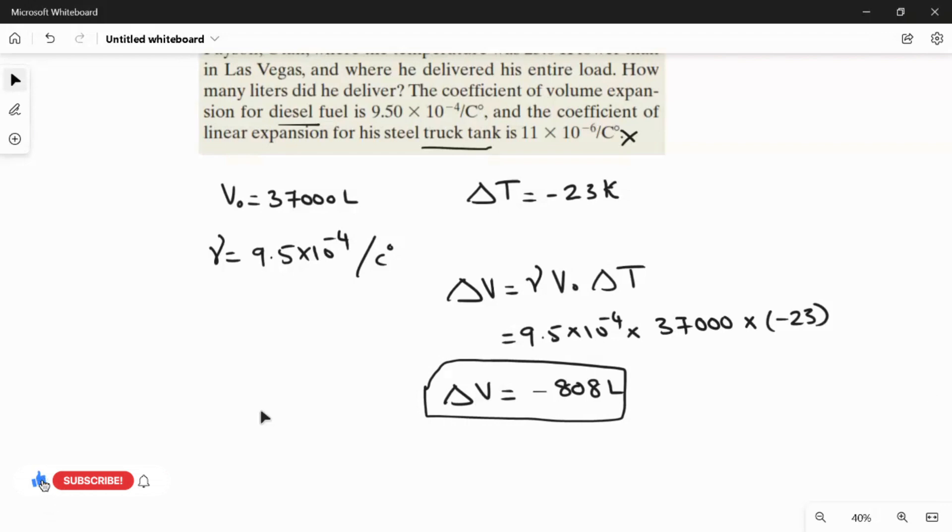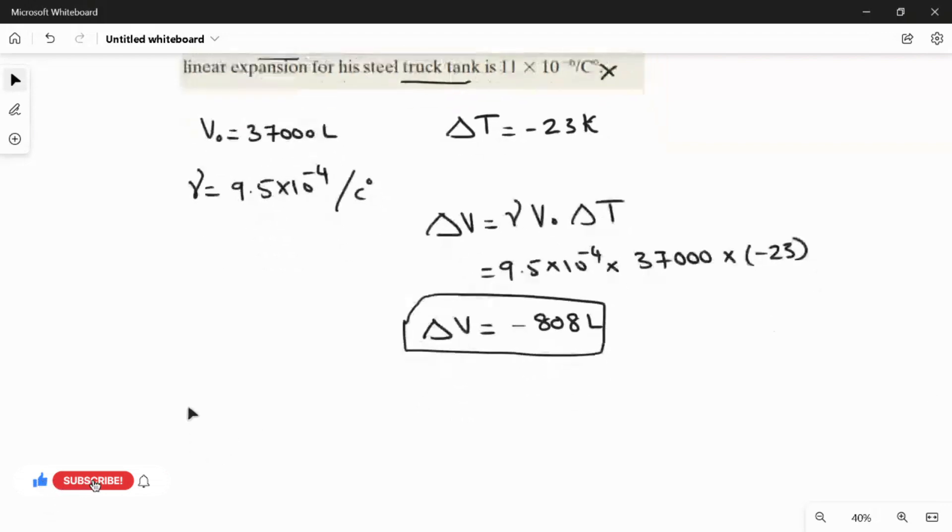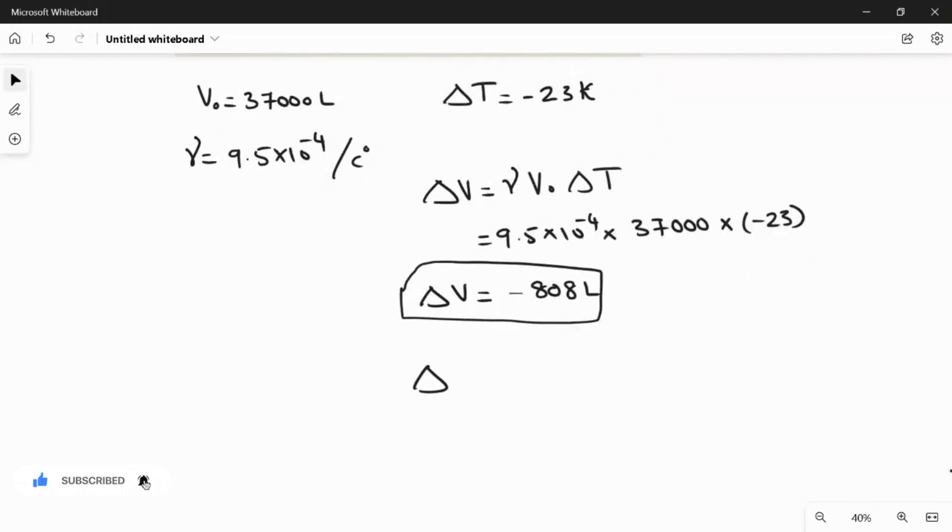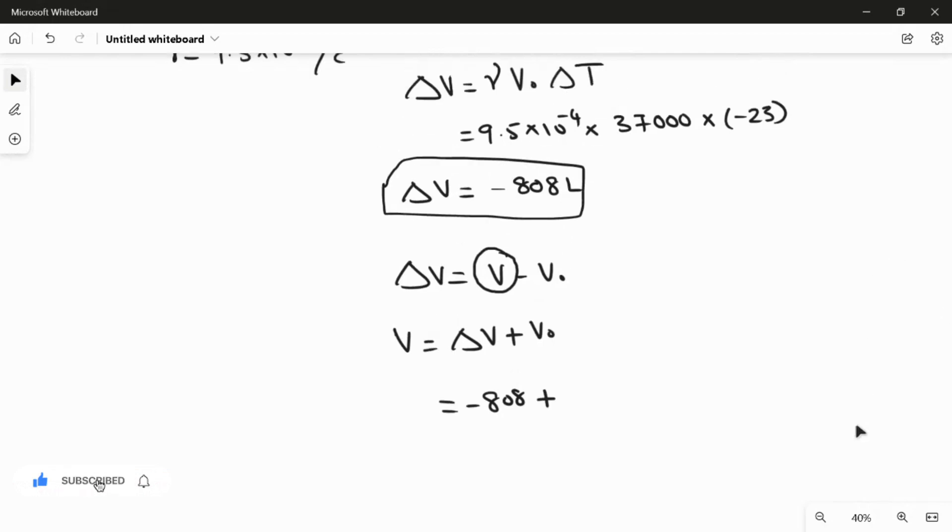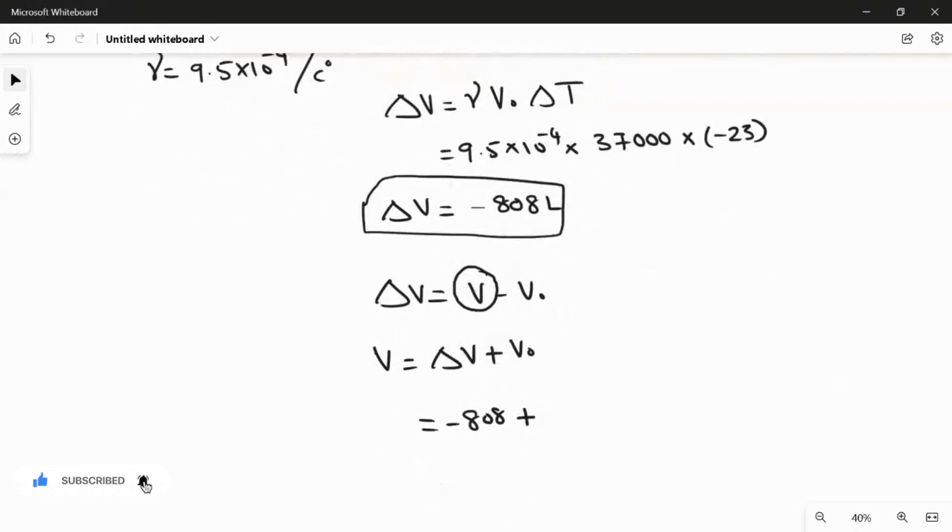After that, we're going to find the amount of diesel fuel delivered. Delta V equals V minus V₀. We're going to find V. Rearranging this equation: V equals ΔV plus V₀. Here ΔV takes the value of minus 808 plus the initial volume, 37,000.